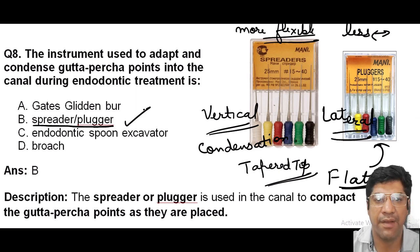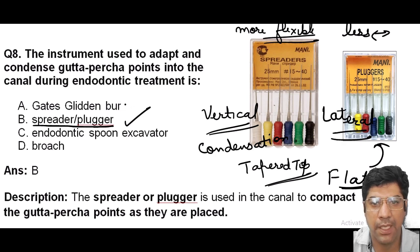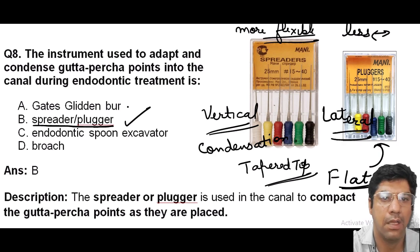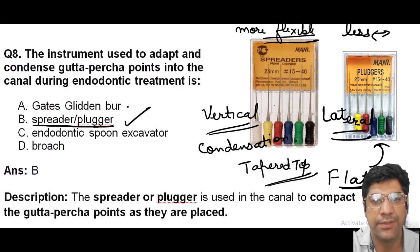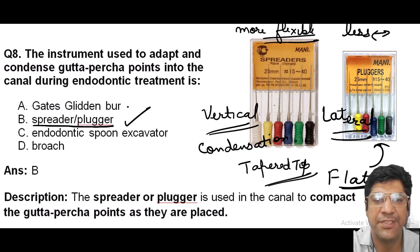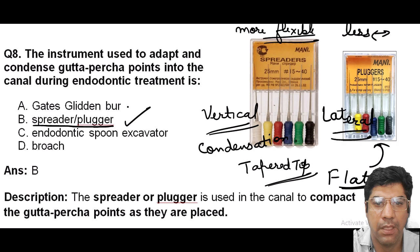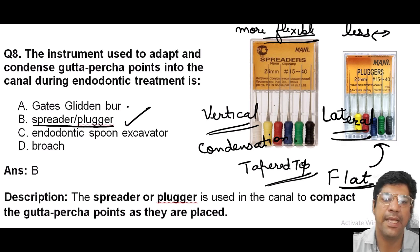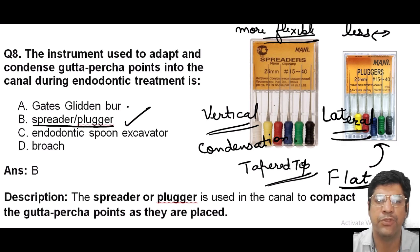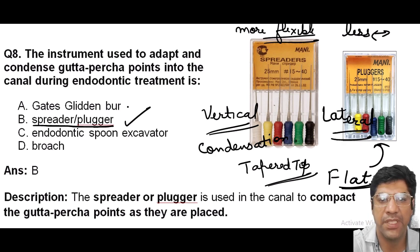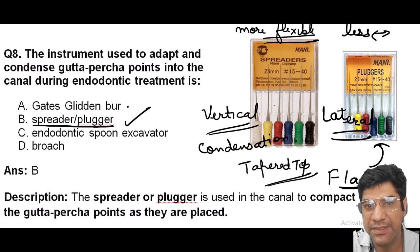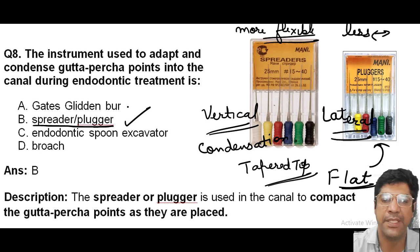Other instruments: GG burrs are rotary cutting instruments with an elliptical shape. The endodontic spoon excavator is a hand instrument used to remove debris, pulp remnants, and softened dentine from the pulp chambers and canals — used during initial cleaning before rotary instruments. Broaches are thin, flexible instruments with barbed edges that engage and remove pulp tissue and debris from the root canal.